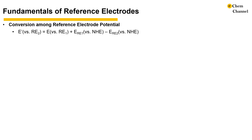One of the most common early questions for reference electrodes is how to convert the potential versus one electrode to the potential versus another. For such a conversion, we can use the equation below, where E' is the potential against reference electrode 2, E is the potential against reference electrode 1, and ERE1 and ERE2 are the potentials of the reference electrodes against a common reference electrode, like the normal hydrogen electrode (NHE) in the example here.